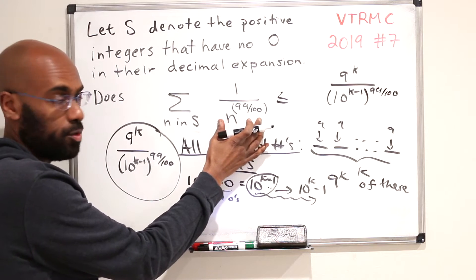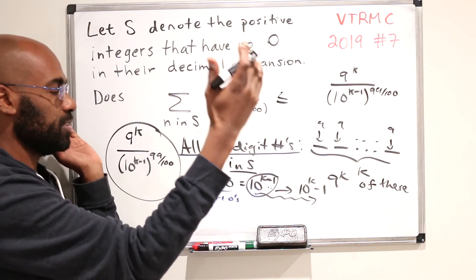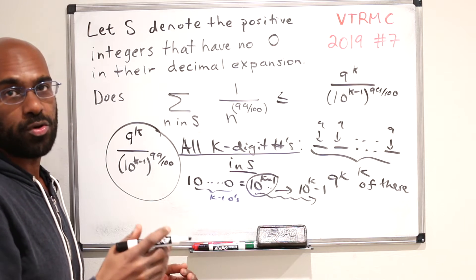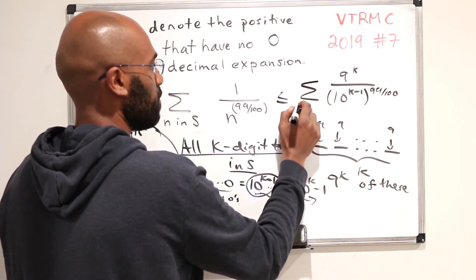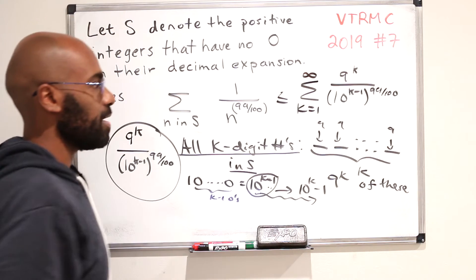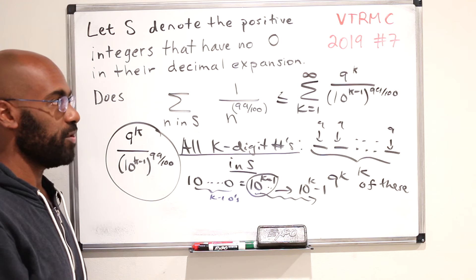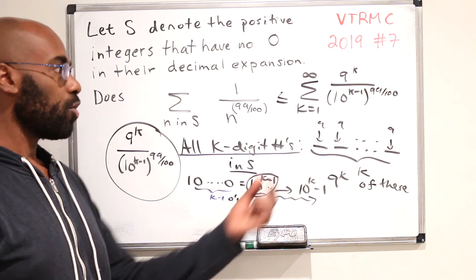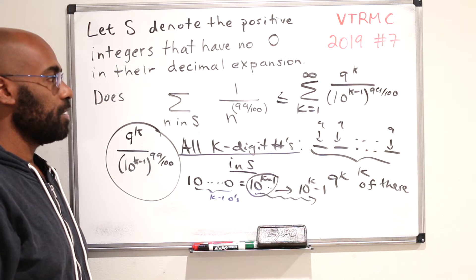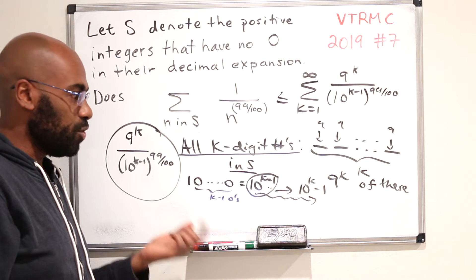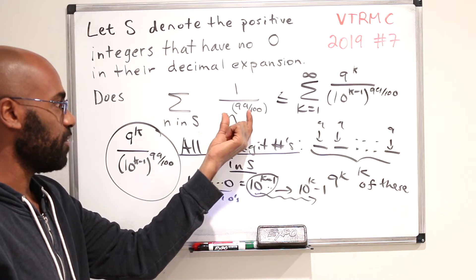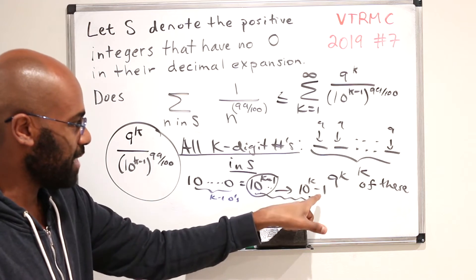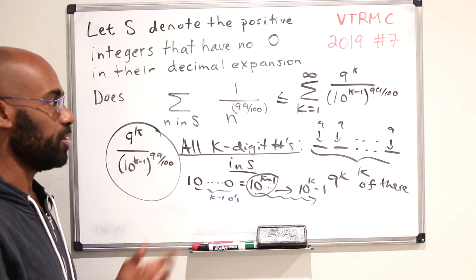So if we look at the sum of this restricted to the k-digit numbers in our set S, all of the values are going to be at most 1 over 10 to the k minus 1 raised to this exponent. This bounds above this thing for everything in S that has k digits, and the number of things in S is 9 to the k. So this sum is going to be bounded above by 9 to the k over 10 to the k minus 1 raised to the 99 over 100. Now we have numbers that have one digit or two digits or three digits, etc. So summing over all possible number of digits, the upper bound is the sum from k equals 1 to infinity of this quantity.